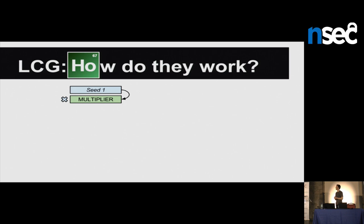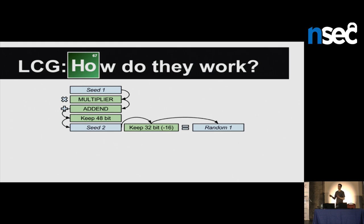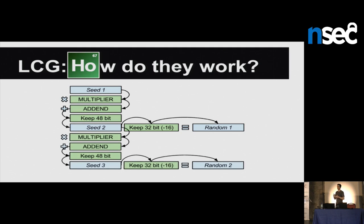The first step in an LCG is a multiplication with a constant - the language will choose a generally large value. Then there's an addition with a generally small value. Then 48 bits are kept - the less significant ones that are kept (though sometimes it's a truncation due to overflow, but in Java it's really only keeping 48 bits). Then we have our second state - that's the seed, but not yet the value we first generate. For the first integer, we take only the 32 most significant bits from the previous state. This same process repeats for each value we want to generate.